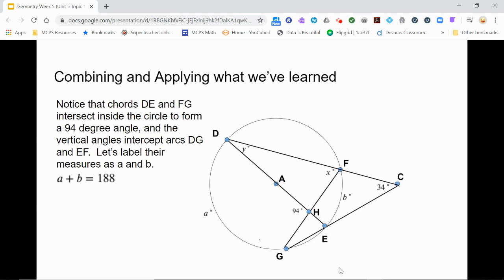The same arcs are intercepted by secant lines DC and GC, which form the 34 degree angle. That means the difference of A and B equals twice 34 or 68.